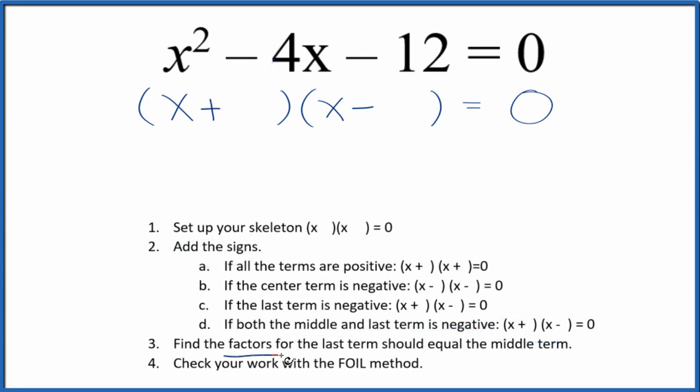Once we've done that, we can find the factors for that last term, that negative 12. And they should add up to the middle term, negative 4. So here are the factors for 12. As I look at the factors for 12, 2 times 6 gives me 12. And the distance between 2 and 6, that's 4. So I think this is what I'm going to work with.